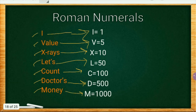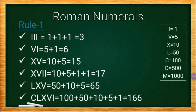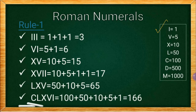I can bet that if you remember this, you will never forget the values. Using these seven different Roman numerals, we can find the value of other Roman numerals. Here is Rule 1: when we write different Roman numerals together, we add the values. For example, III means I plus I plus I, which is 1 plus 1 plus 1, equal to 3.